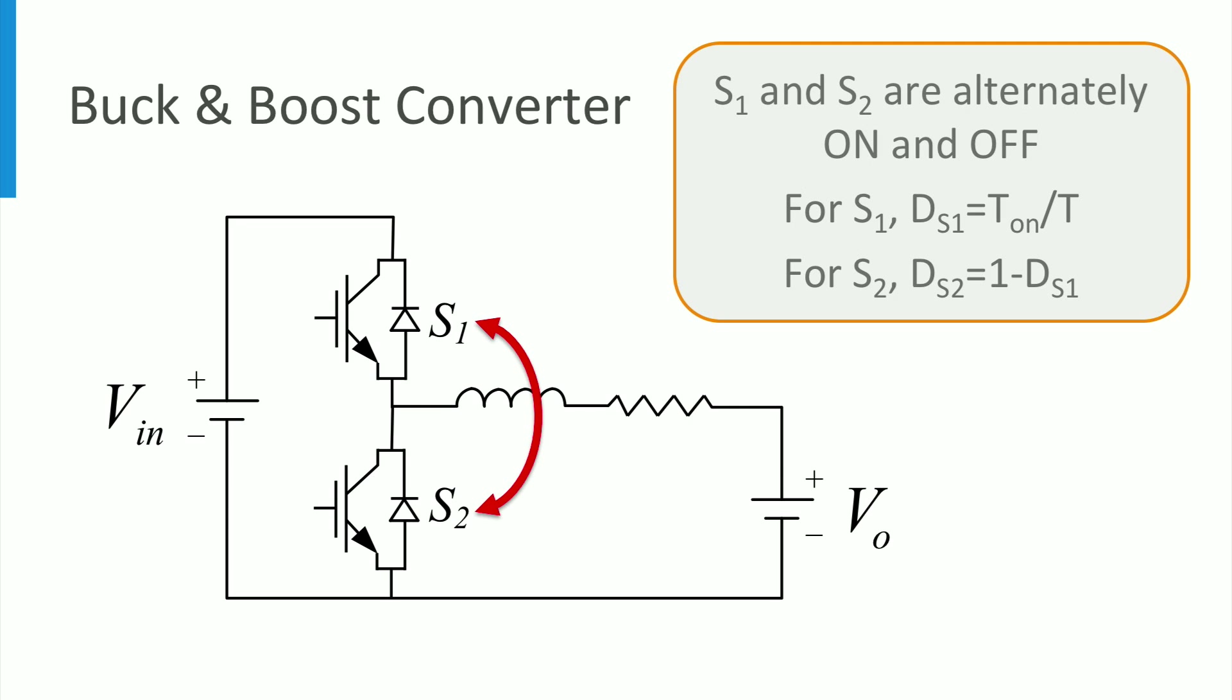The switches open and close alternatively in such a way that when the S1 is closed, S2 is open and vice versa. Note that in this topology both switches 1 and 2 cannot be closed at the same time since the input will be short circuited. The time of one cycle is T and the S1 is closed for a period T_on.